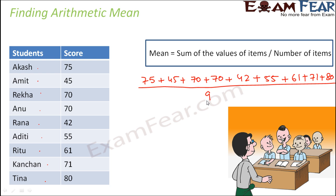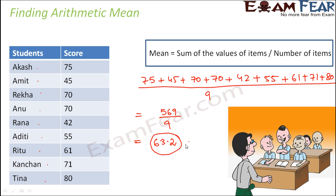We have 9 students, so this is divided by 9. The sum is 569 divided by 9, which comes out to be 63.2. So 63.2 is the average score of the class — meaning if all 9 students got equal marks, each would have scored 63.2.